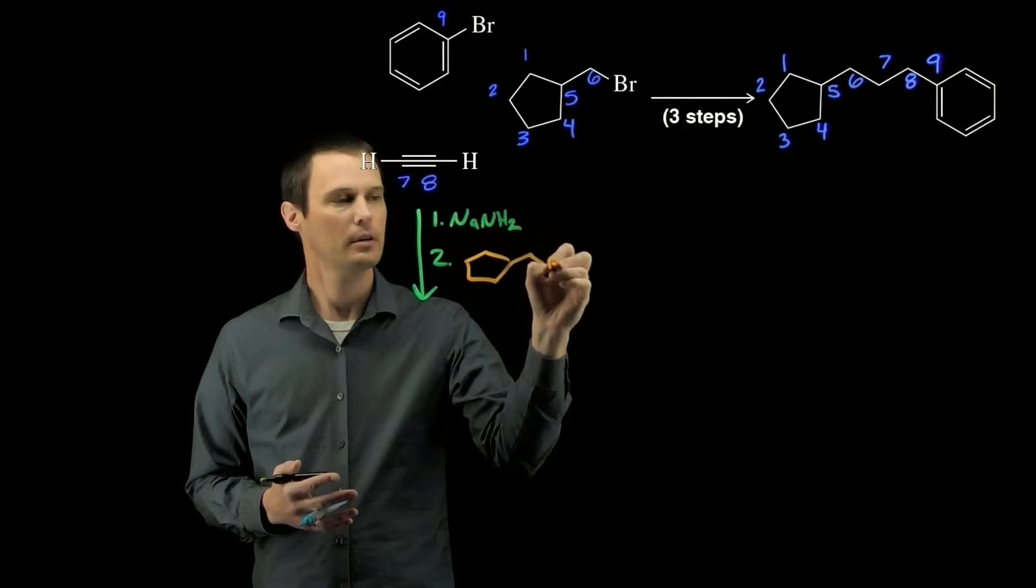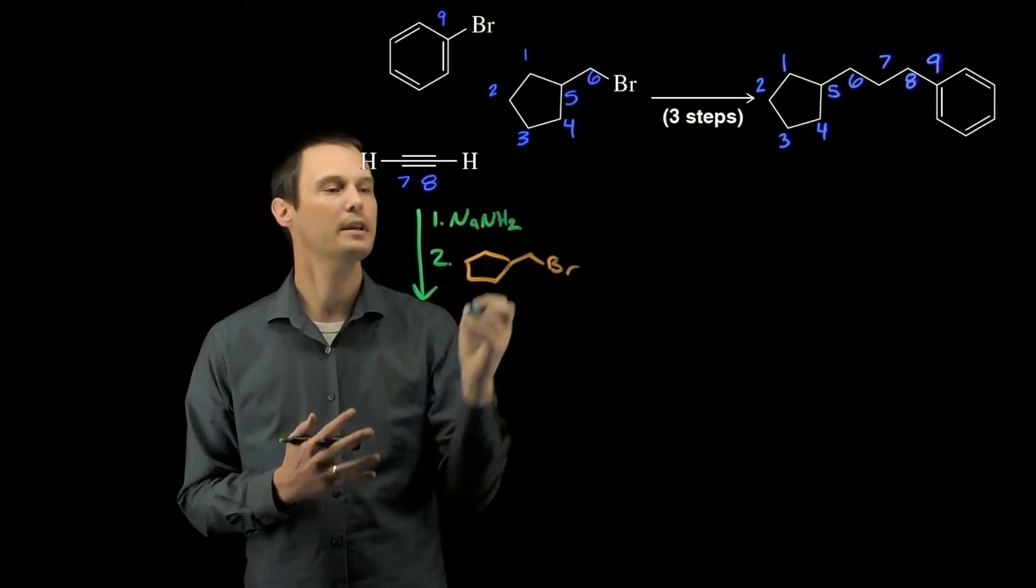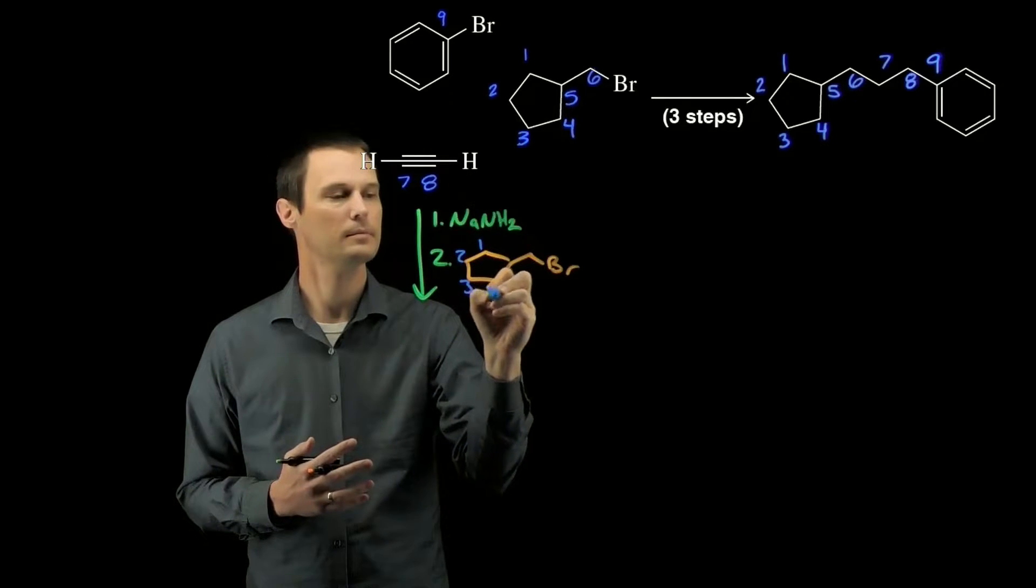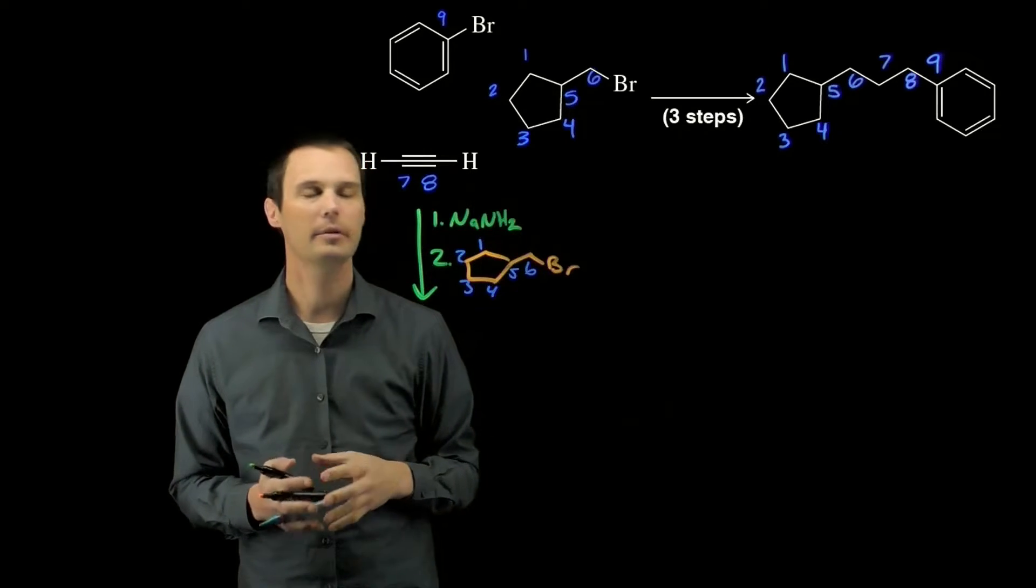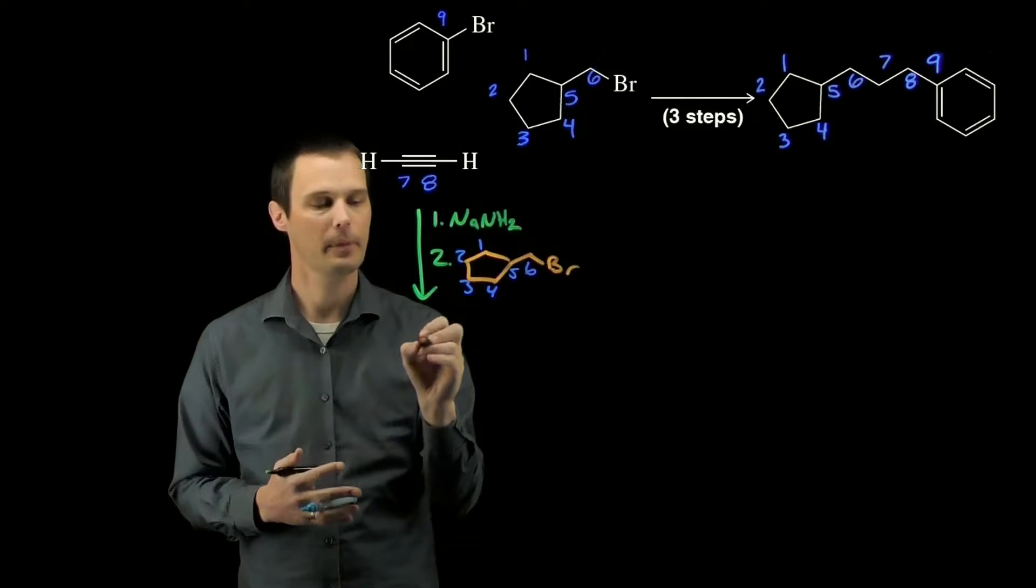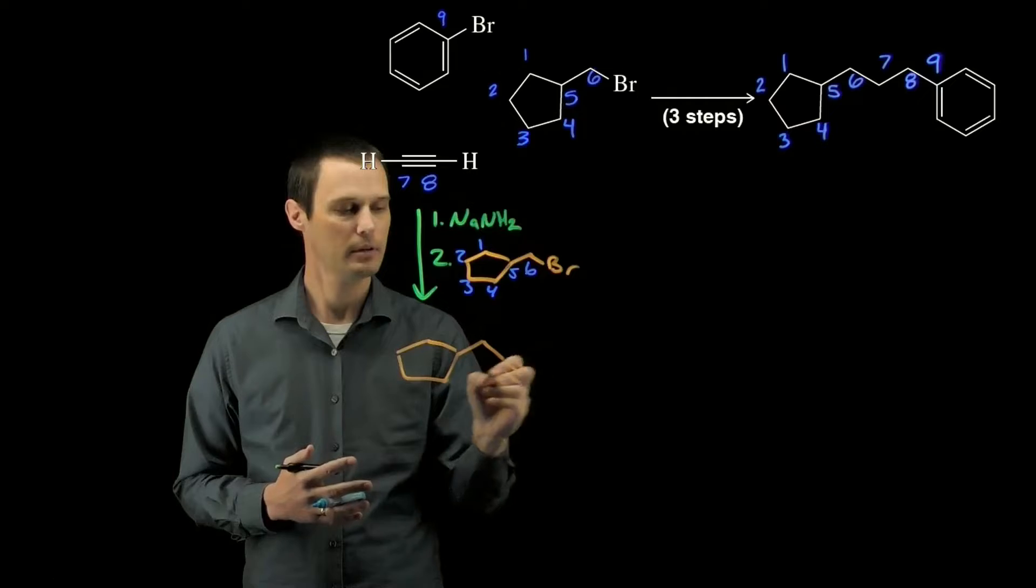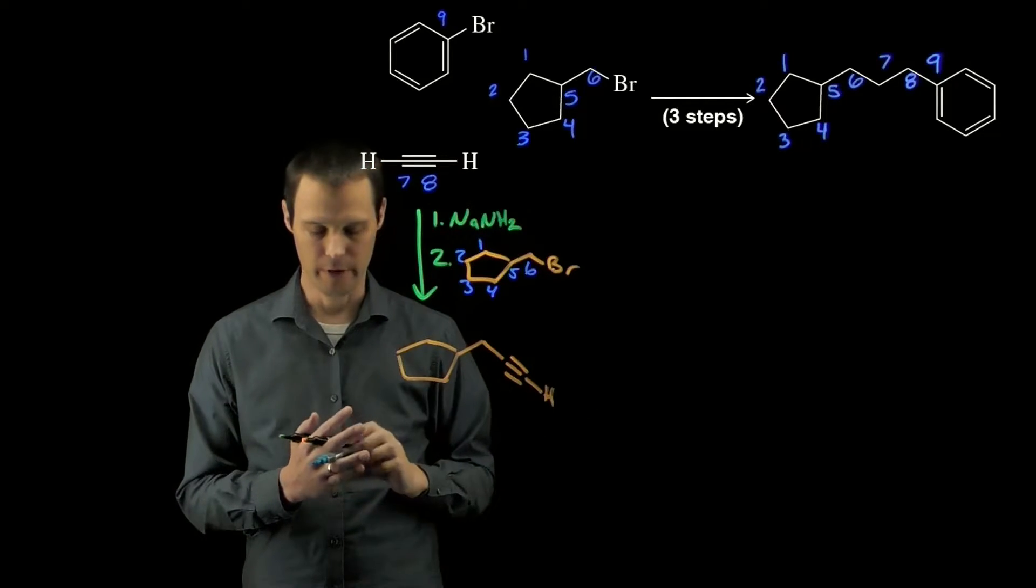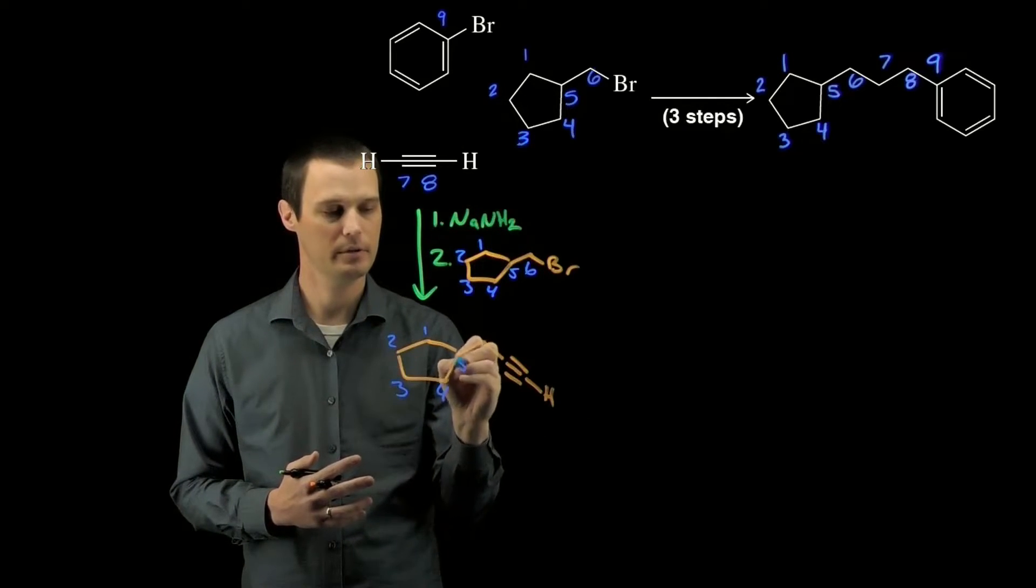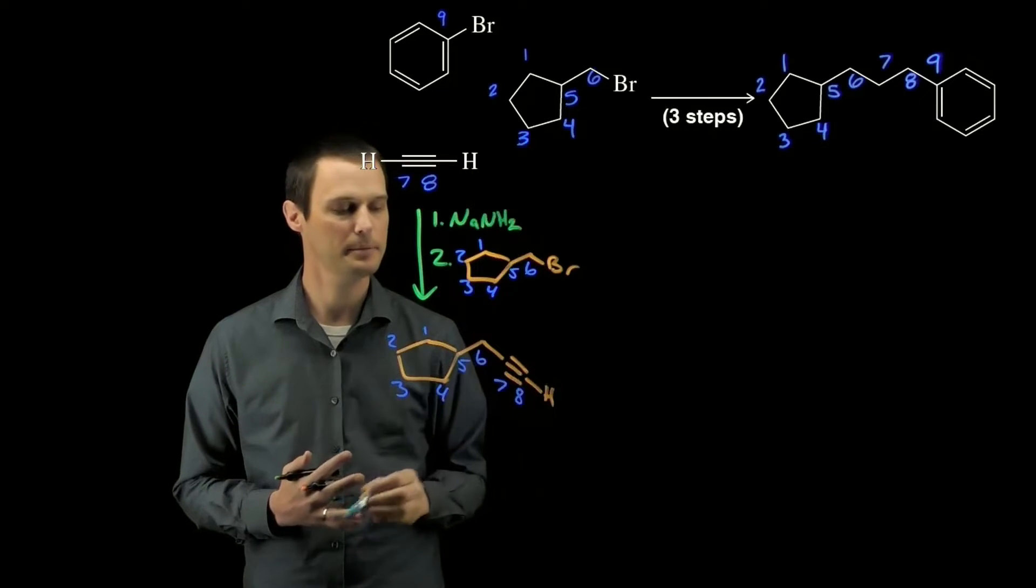We'll bring along the cyclopentane reagent, bring our carbon numbers along to make sure we don't drop or add any. That will do the alkyne alkylation reaction to form a new intermediate. Again, we should number our carbons to make sure we don't drop or add any carbons.